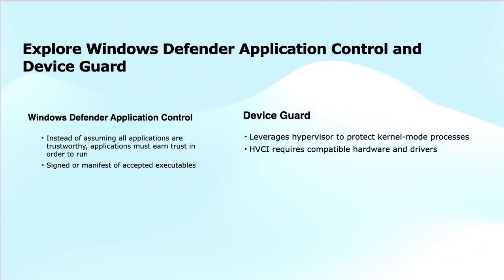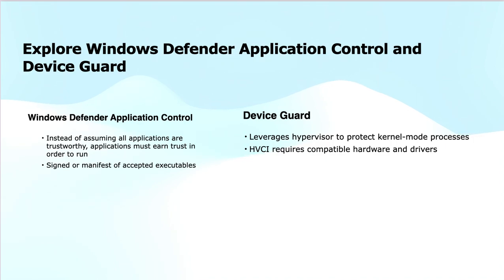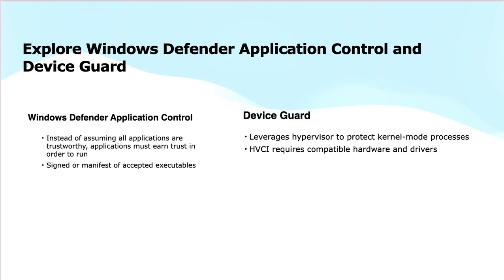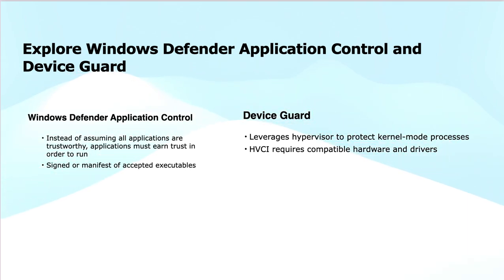Manifest-based trust is another point. If an application has a manifest — which is a file that outlines the application's metadata and permissions — it can also be trusted and allowed to run if it meets security requirements. In short, WDAC prevents untrusted applications from running by requiring them to be signed or have an approved manifest. This helps protect systems from malware or unauthorized software.